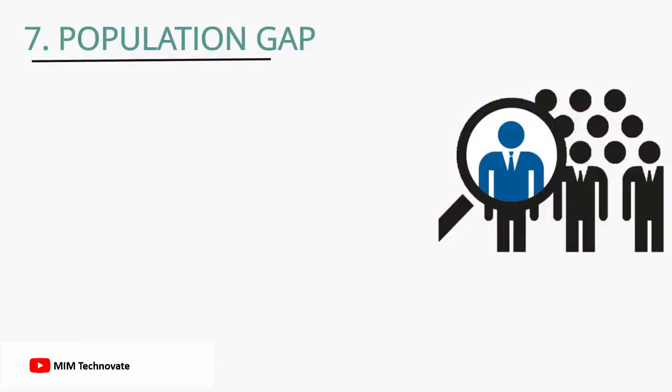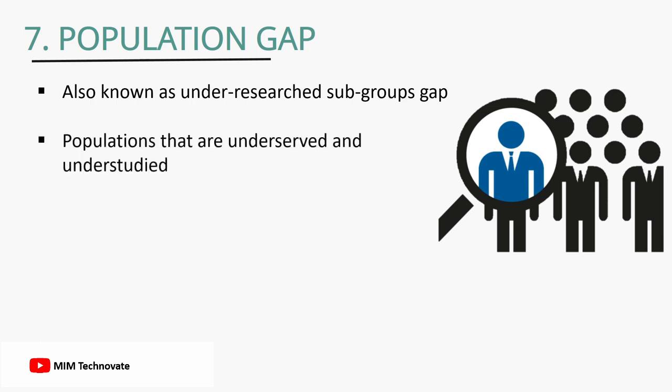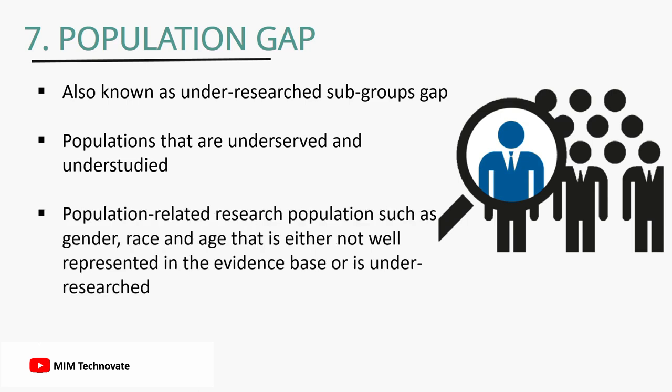Population gap, also known as under-researched subgroups gap, is a common gap discovered by researchers. There are always populations that are underserved and under-studied. This gap is a type of population-related research pertaining to populations such as gender, race, and age that are either not well represented in the evidence base or are under-researched.